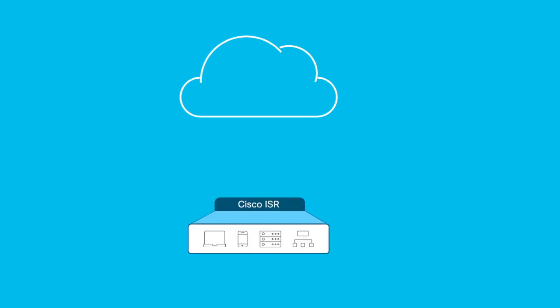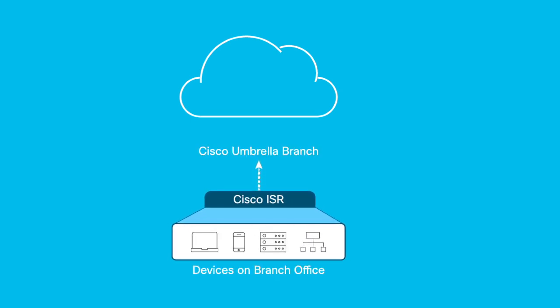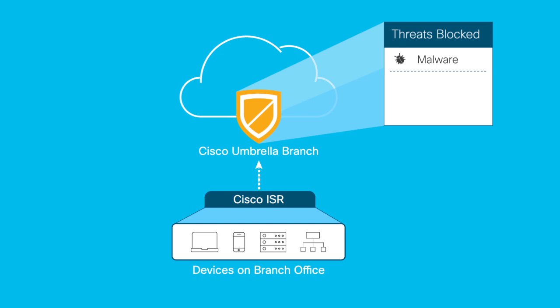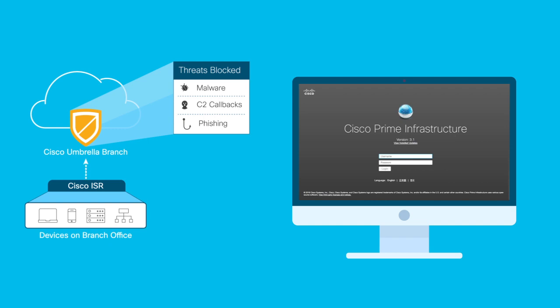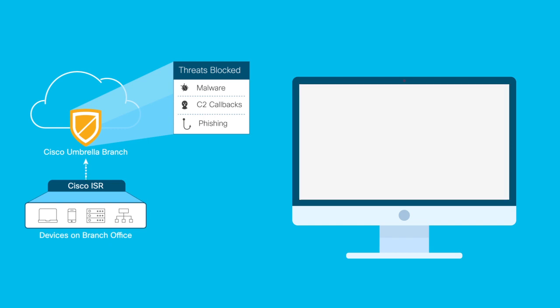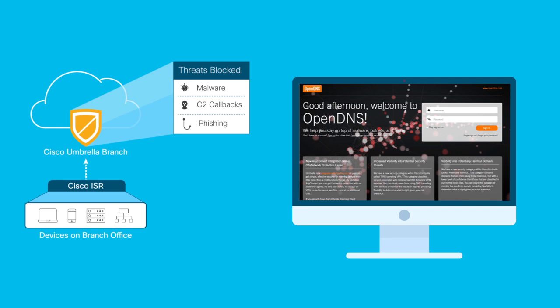Cisco Umbrella Branch is a cloud-delivered security service for the Cisco Integrated Services Router that provides the first layer of protection against threats at branch offices. Umbrella Branch provides visibility and enforcement at the DNS layer to block requests to malicious domains and IPs before a connection is ever made. This video shows how to deploy Umbrella Branch on a Cisco 4451 ISR by using Prime Infrastructure, and also explains how to create policies to block websites for any devices on your network.